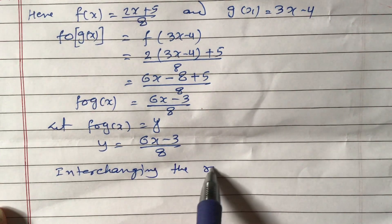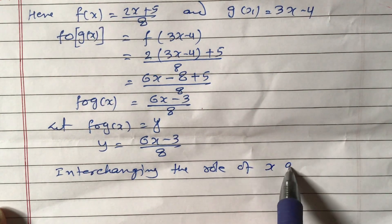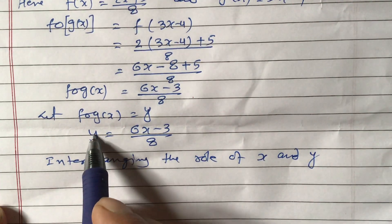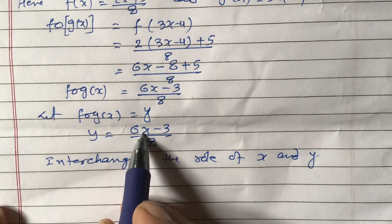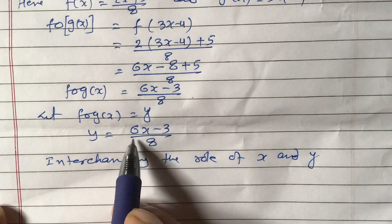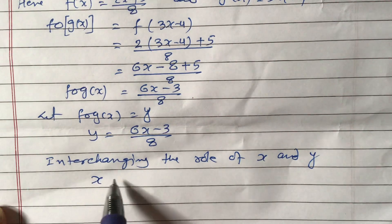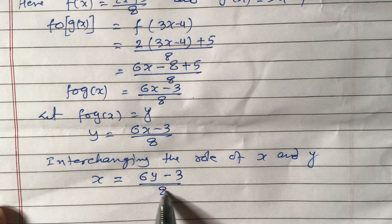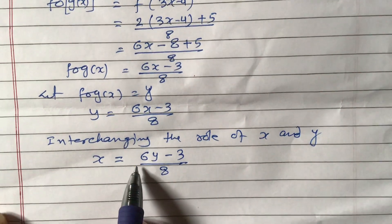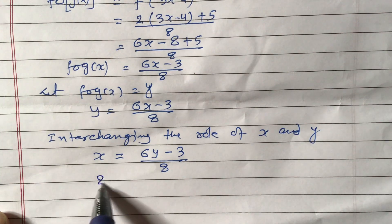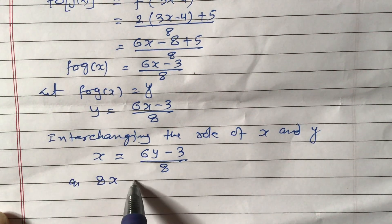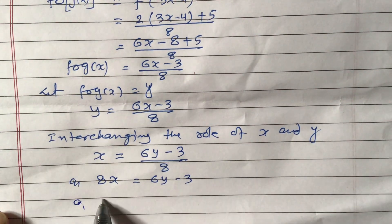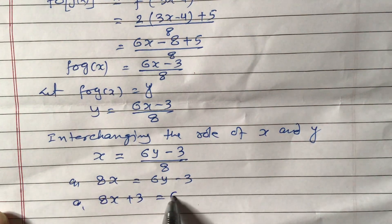Interchanging the role of x and y: in place of x we write y, and in place of y we write x, to find the inverse. So x equals (6y - 3) / 8. Now if we find the value of y from this, that will be the inverse. Multiplying both sides by 8: 8x equals 6y minus 3, then transposing gives 8x plus 3 equals 6y.